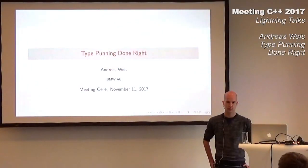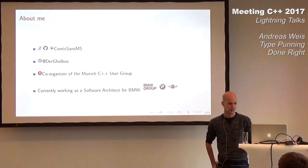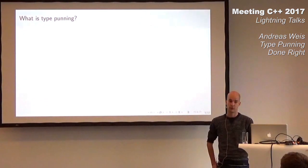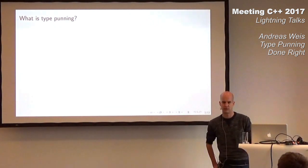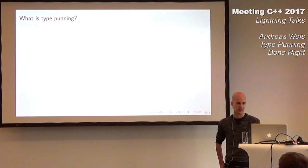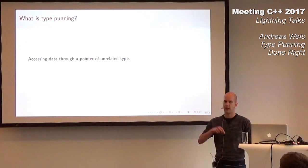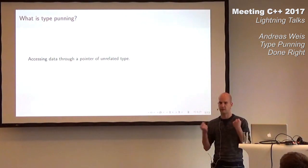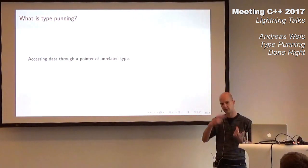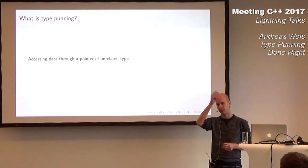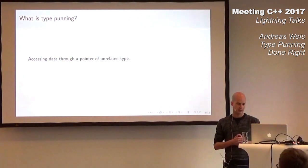Hello everyone. Today we're going to talk about type punning. I don't know how many of you are familiar with the term, but I'm sure most of you have used it in one situation or the other. What it actually means is if you're accessing some data through a pointer of an unrelated type. Imagine you have an object of type A and now you have a pointer of type B star where B is unrelated to A, and you simply make that pointer point to the object of type A. That's type punning.